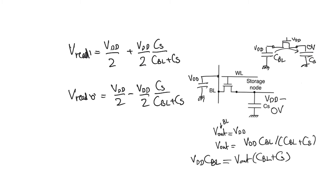One issue is that one-transistor DRAM cells have something called destructive read. This means that when you read the value stored in a cell, you also destroy that stored value, because you are taking away or giving charge to the storage capacitor. At the end of the charge sharing operation, both Cs and Cbl have the same voltage — neither zero volts nor VDD — which is not the original stored value. So after reading, you must go back and write the value again to that cell, which really complicates reading from a DRAM.